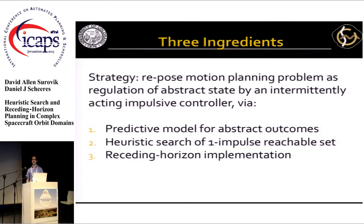The approach I've made for this problem is essentially a reposing of a motion planning problem as regulation of an abstract state via an intermittently acting impulsive controller. There are three key components: first, a predictive model for abstract outcomes; second, a heuristic search of the single-impulse reachable sets; and third, a receding horizon implementation of this control scheme.